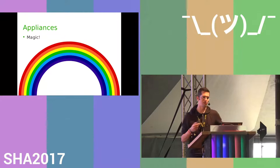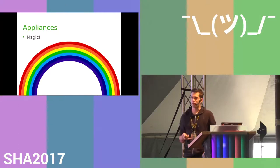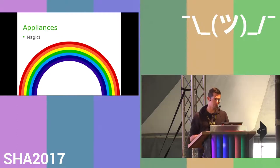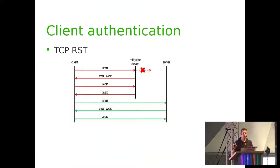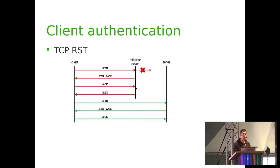Appliances are often sold as magic — vendors claim they can handle every kind of DDoS attack. Against SYN floods, appliances often play TCP/IP games. The device sits in front of your server, terminates SYN packets, and sends the SYN-ACK itself. The server stays idle. After the ACK, the mitigation device resets the connection, and only on the second connection attempt is the client allowed to connect to the actual server. This is a good way to mitigate spoofed SYN floods.